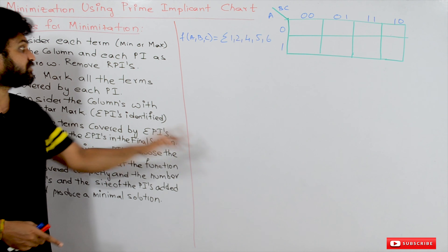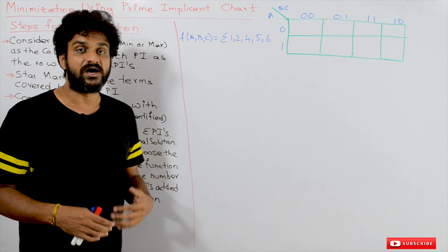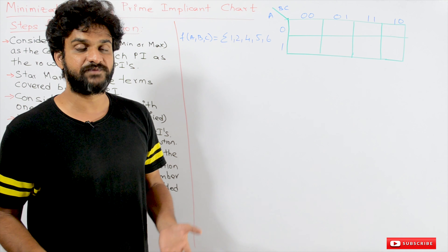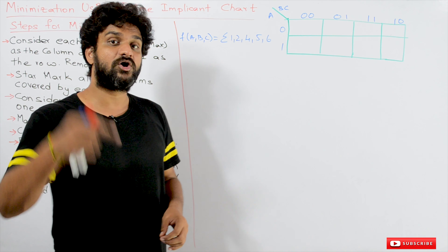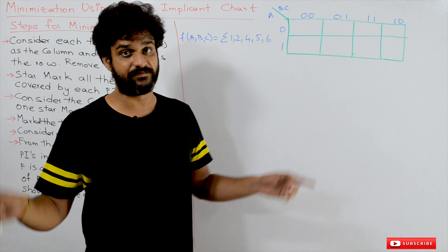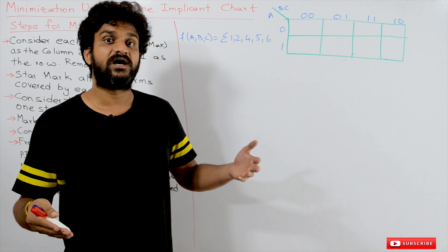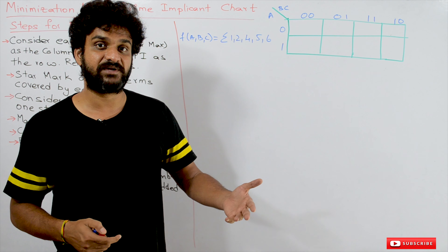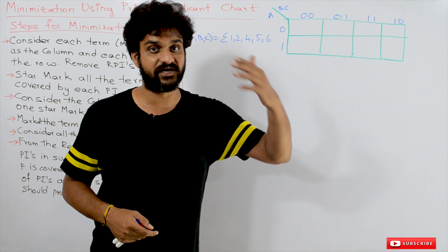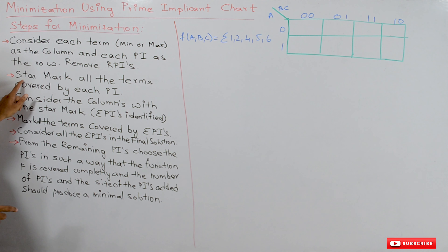From those rows we have to remove redundant prime implicants, because redundant prime implicants are of no use — every term of a redundant prime implicant is already covered by essential prime implicants, so there is no need to include them.